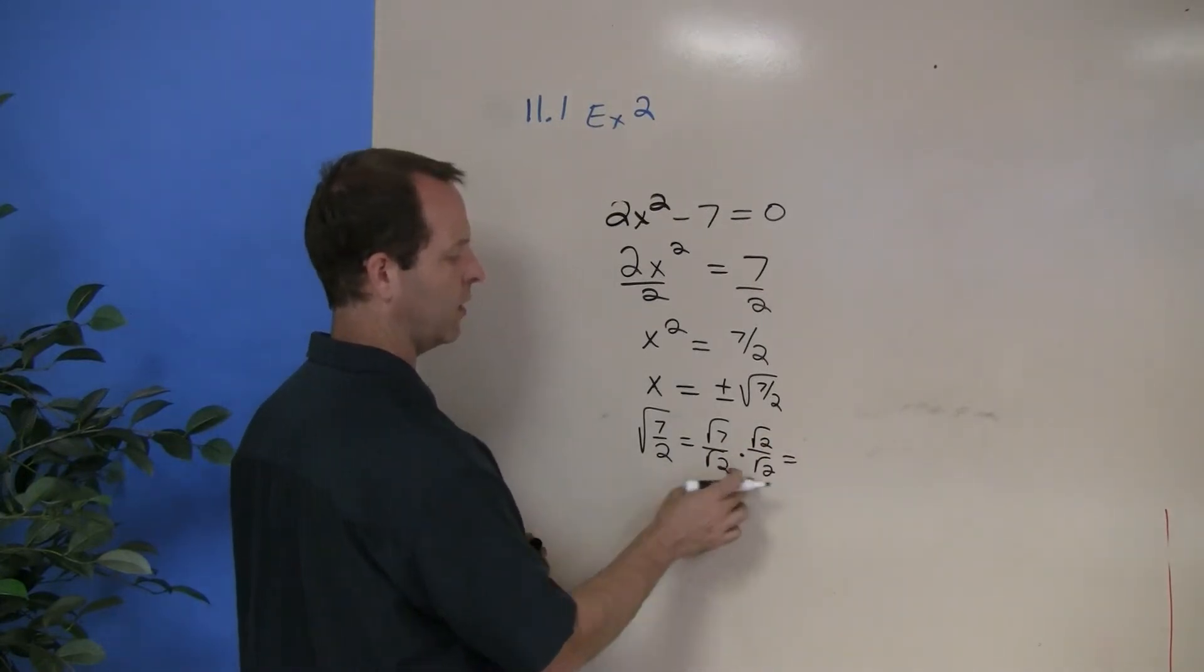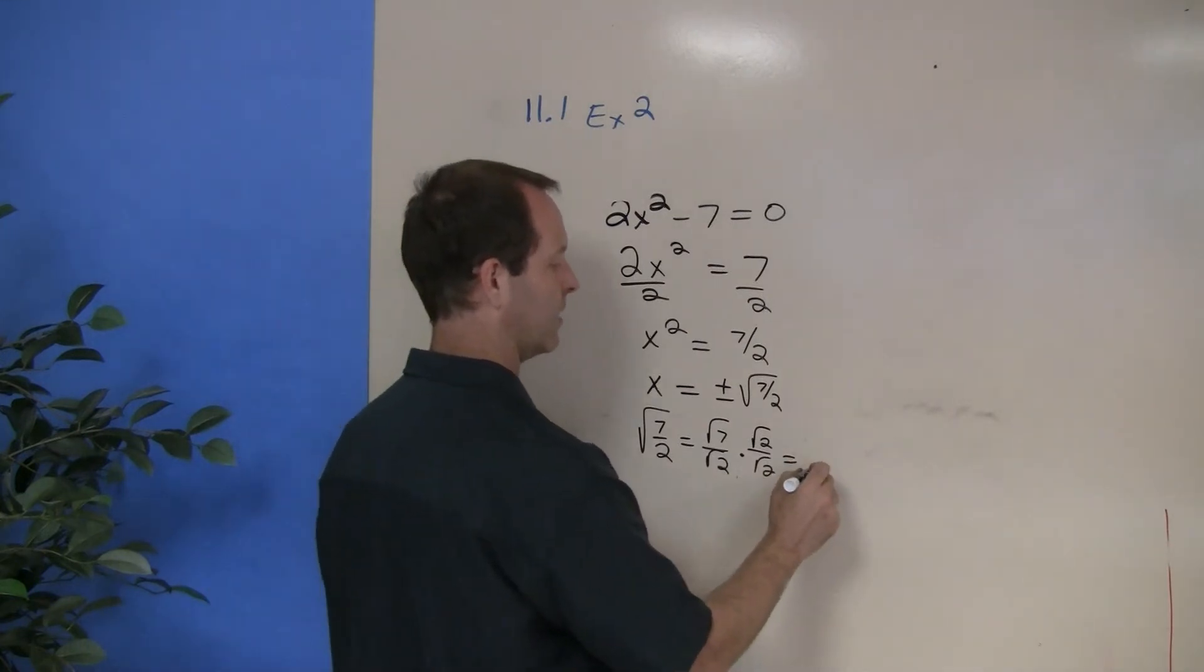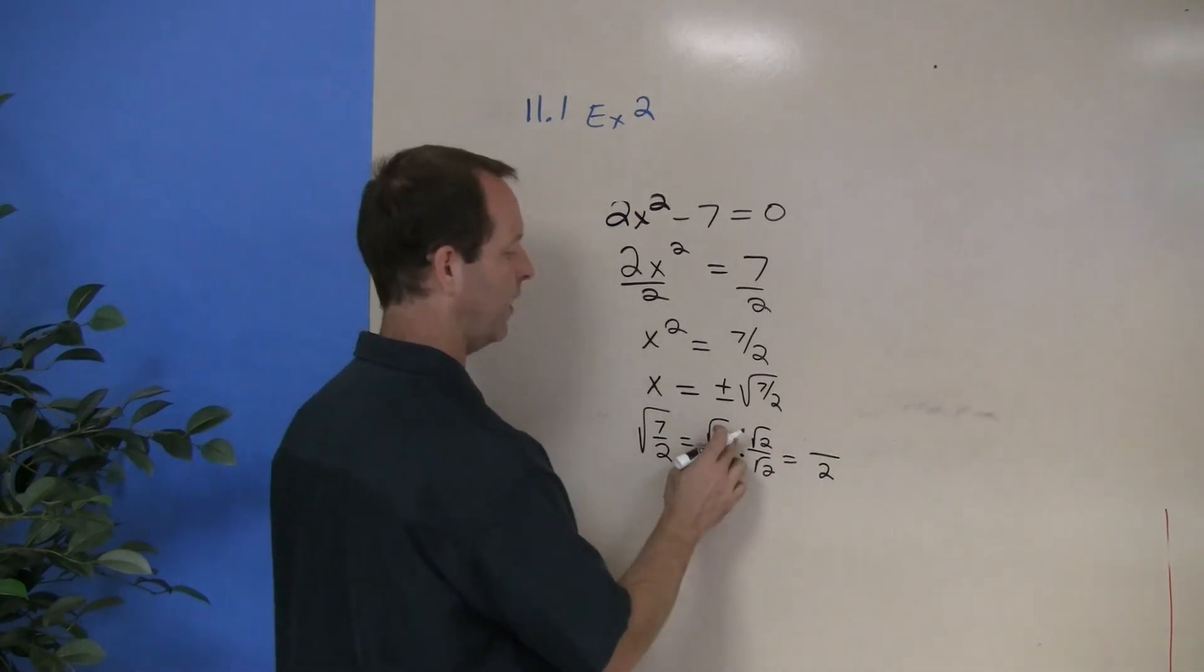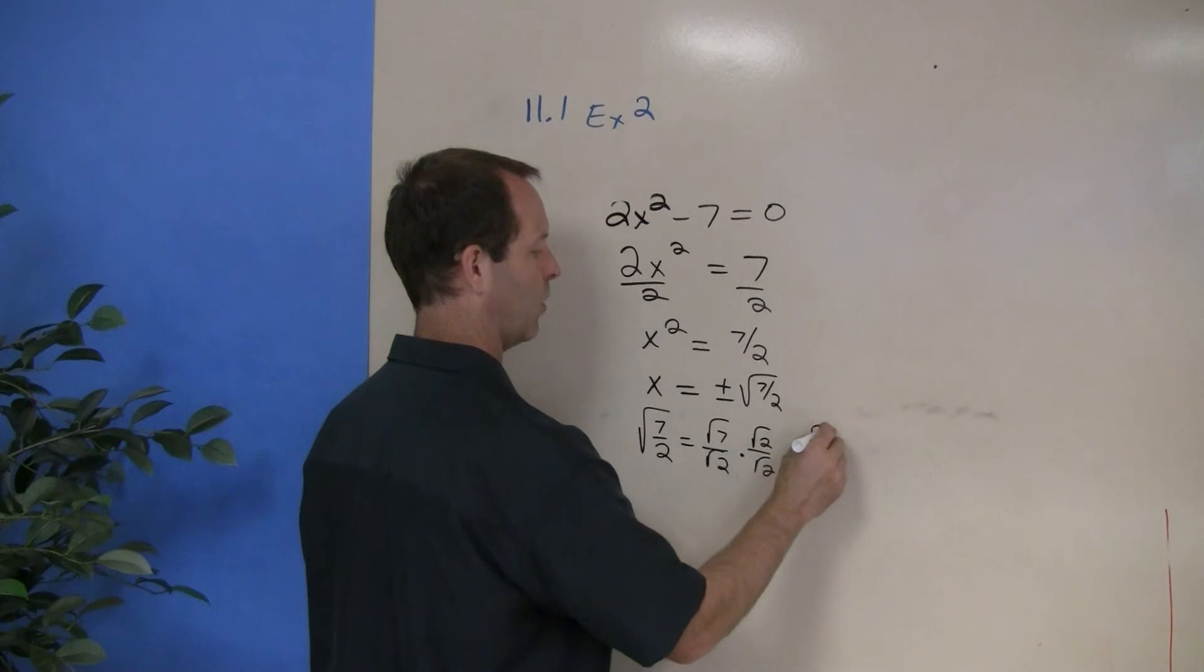The denominator, square root of 2 times the square root of 2, that is 2. And the numerator, square root of 7 times the square root of 2, that's the square root of 14.